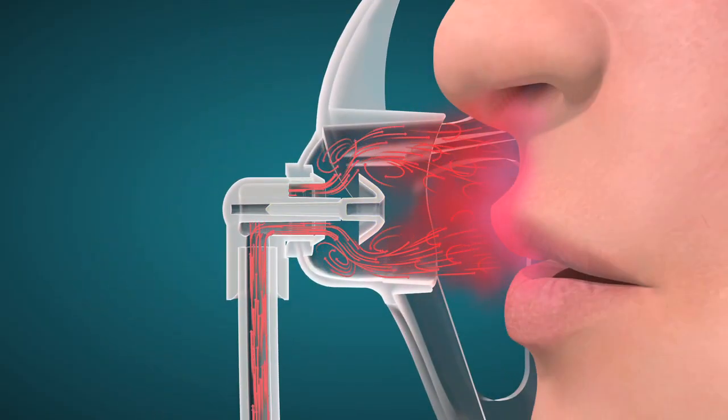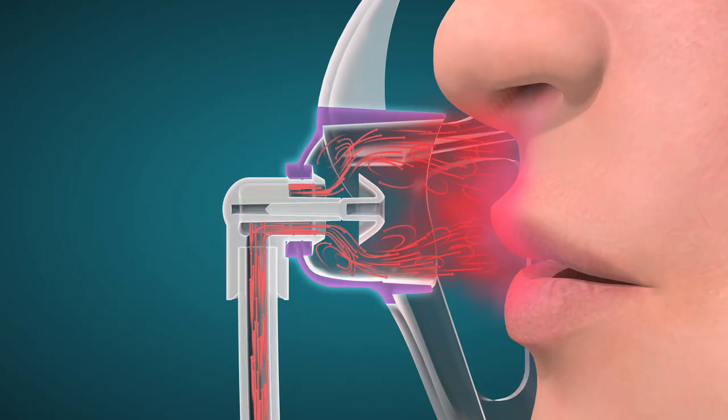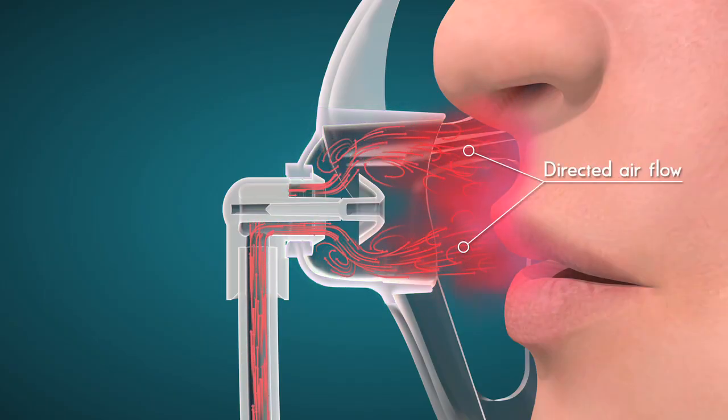The triangular directional diffuser refines the shape of the oxygen vortices and directs the flow towards the patient's nose and mouth.